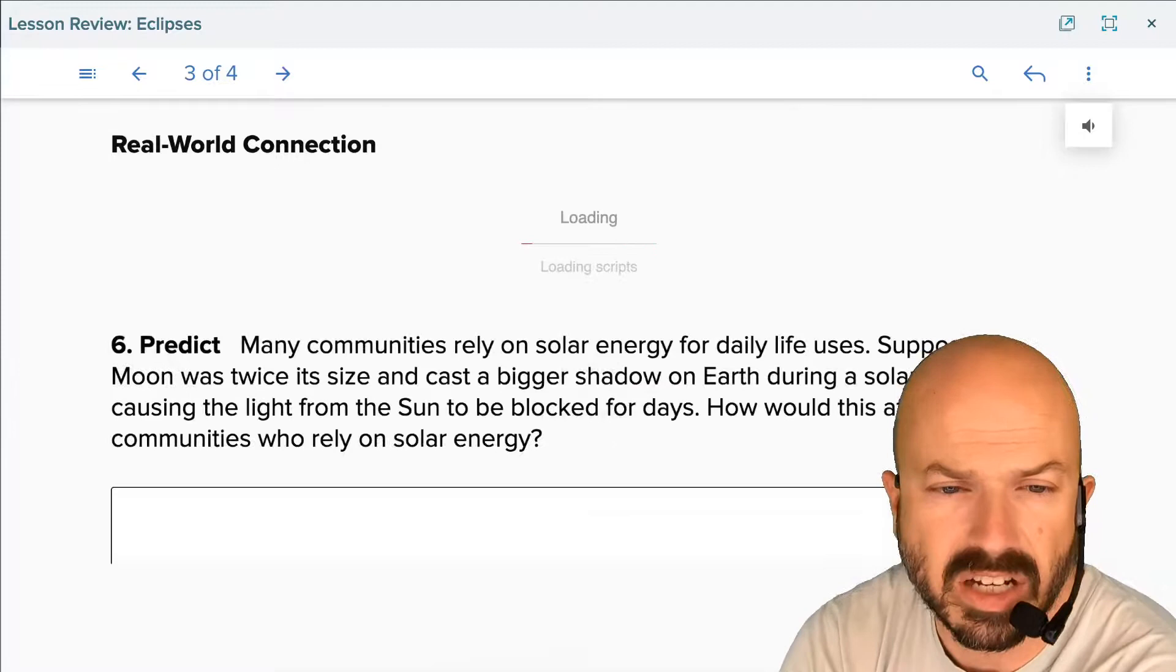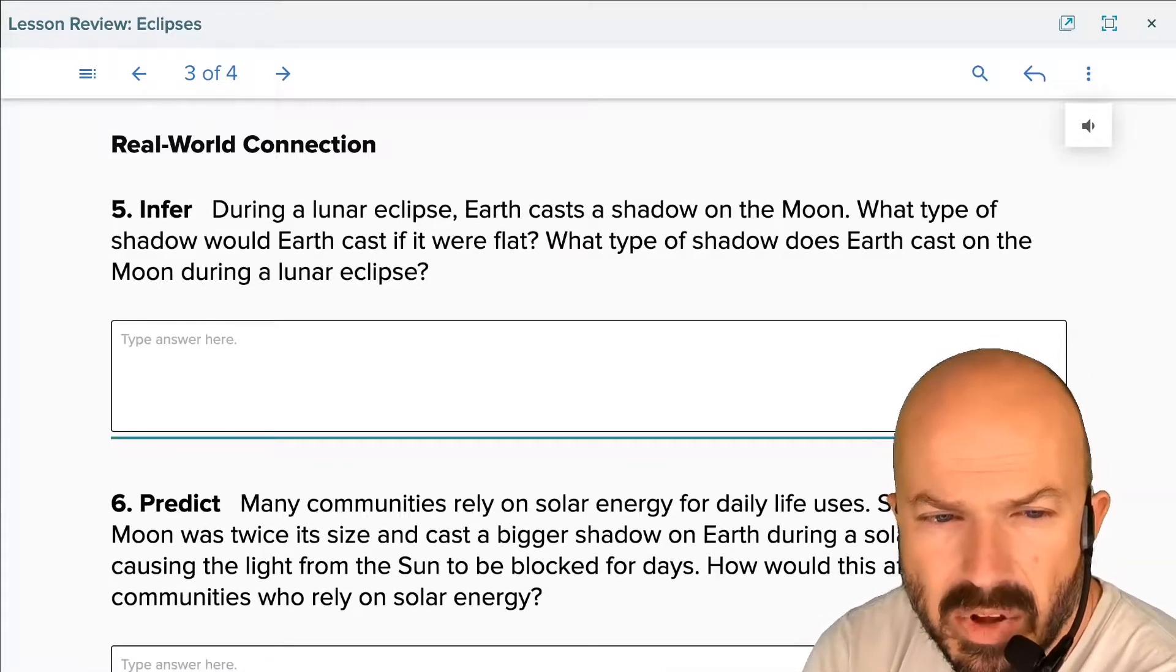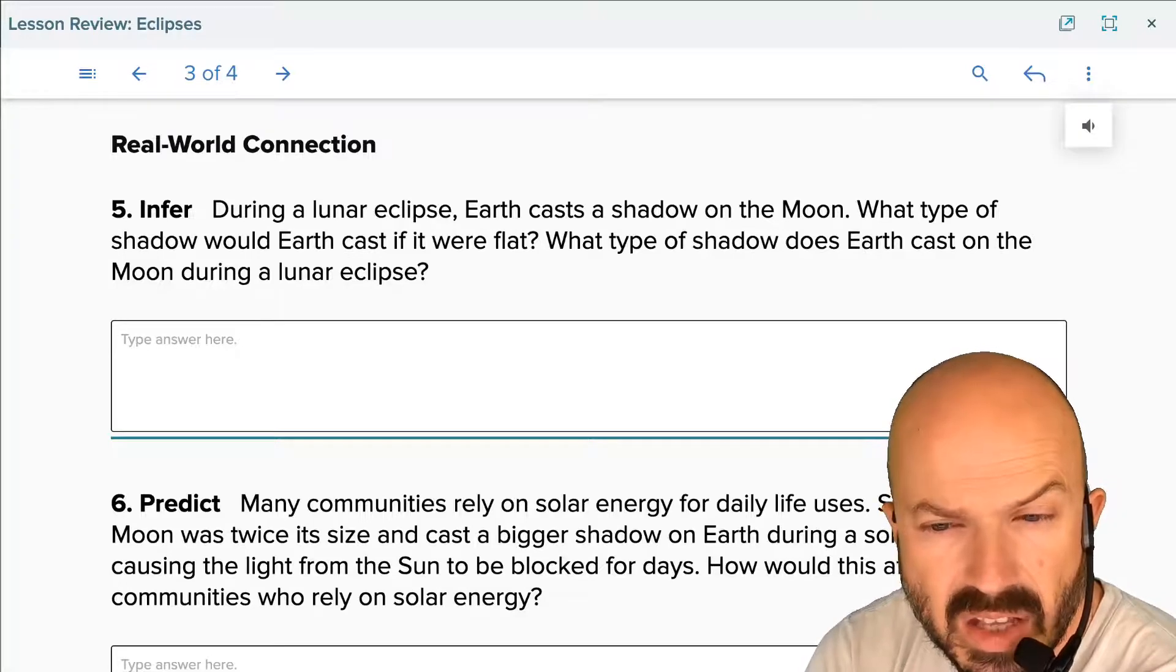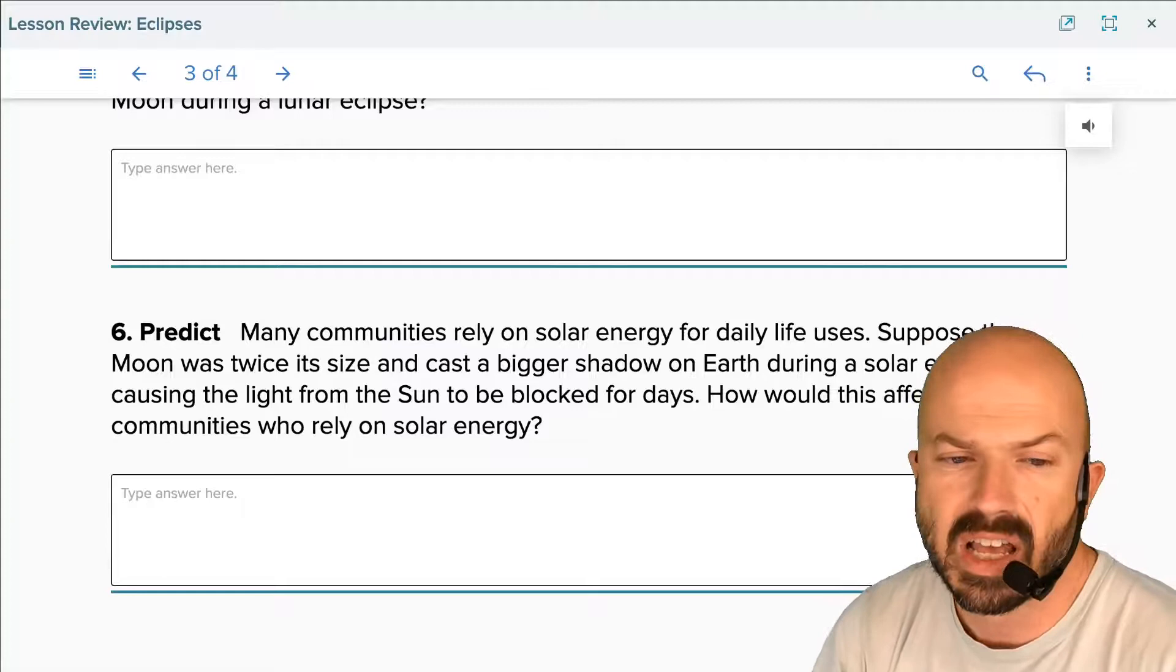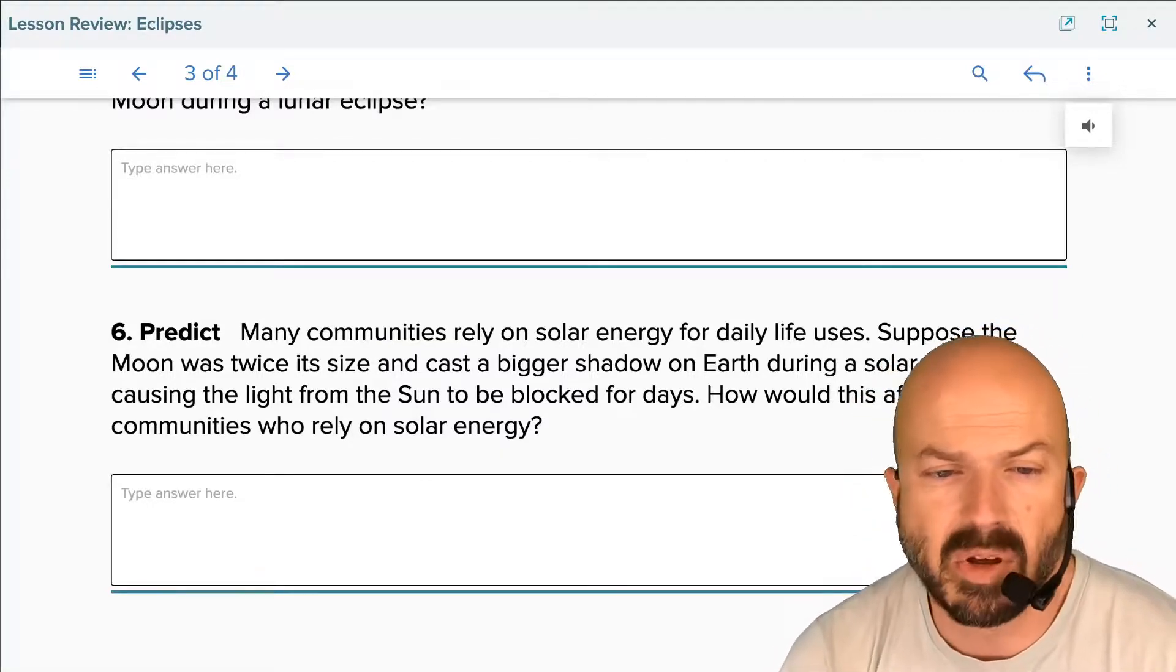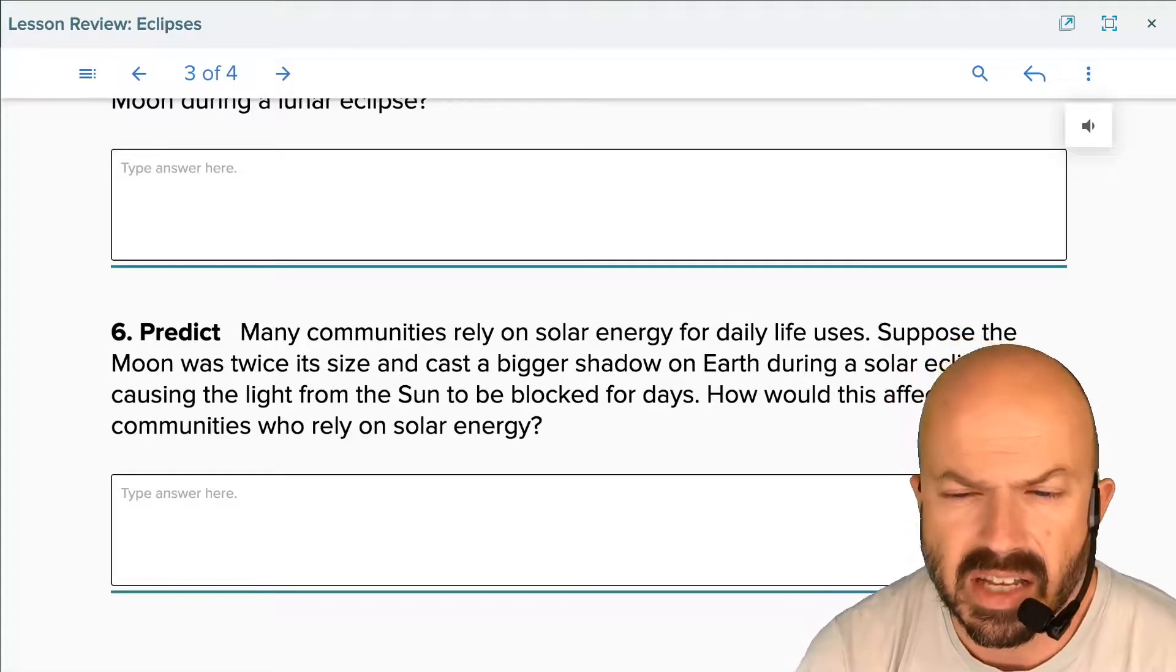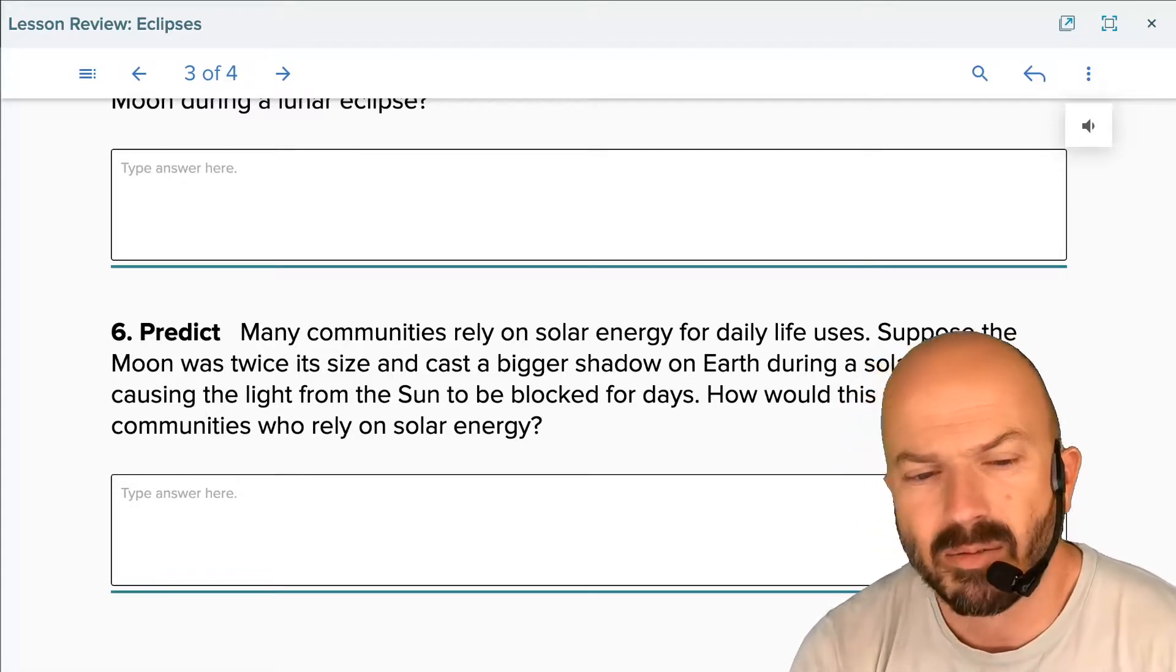We've got a real world connection here. During a lunar eclipse, earth casts a shadow on the moon. What type of shadow would earth cast if it were flat? What type of shadow does earth cast on the moon during a lunar eclipse? Now many communities rely on solar energy for daily life uses. I bet a lot of you have solar panels or your neighbors may have solar panels on their house. Suppose the moon was twice its size and cast a bigger shadow on earth during a solar eclipse, causing the light from the sun to be blocked for days. How do you think this might affect communities who rely on solar energy?